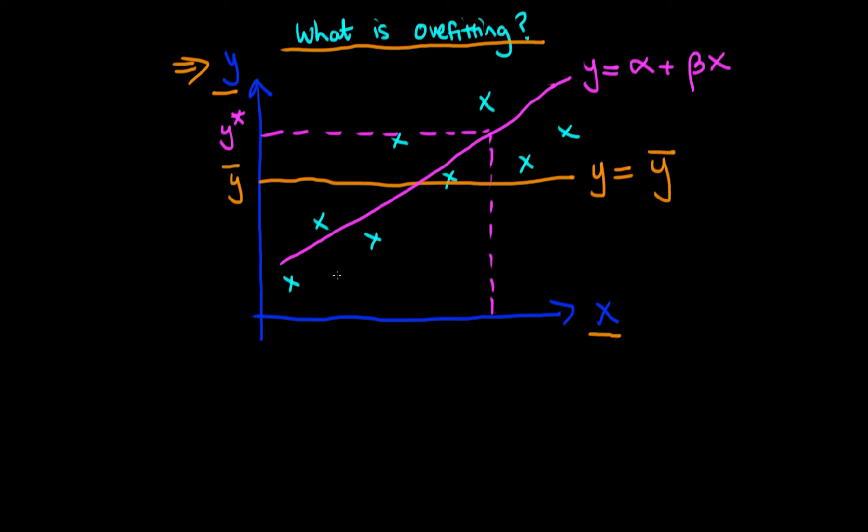A more complicated model would be to include further polynomial powers of x, and if we do so, perhaps if we include enough of the polynomial terms, we can actually fit our data perfectly. So this red line here might be an equation of the form y equals alpha plus beta 1 x plus beta 2 x squared plus beta 3 x cubed, etc. And because we've included all these other terms, that's allowed us to fit all of the variation in our data.